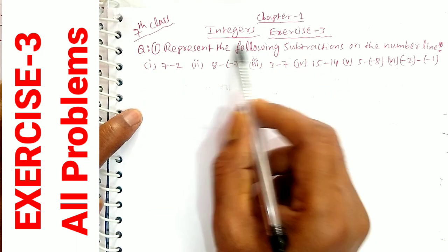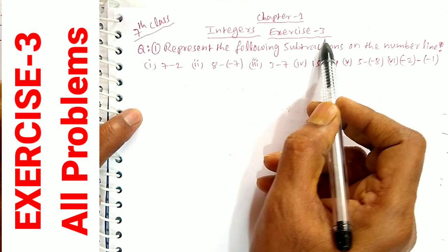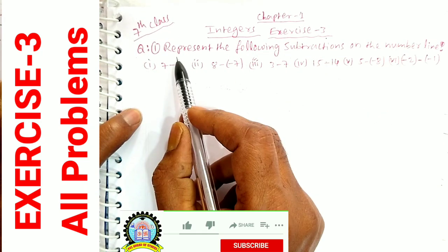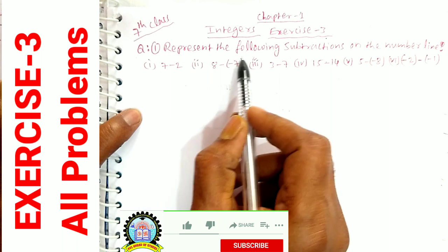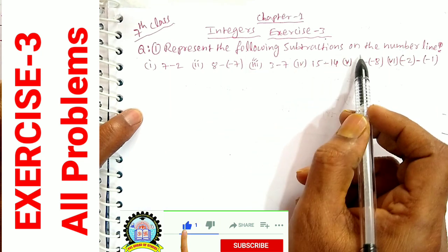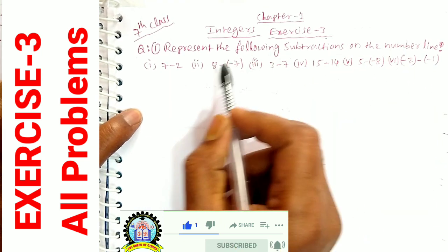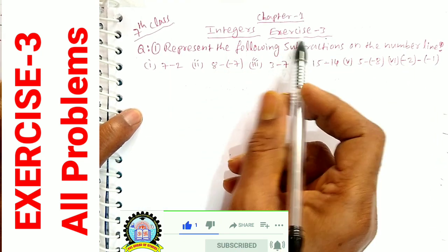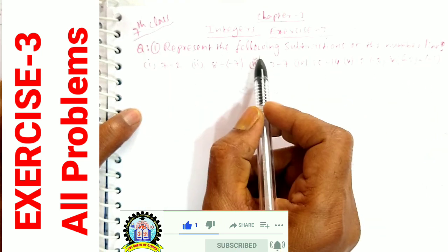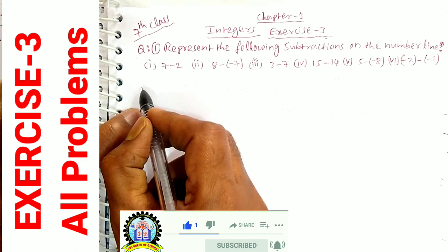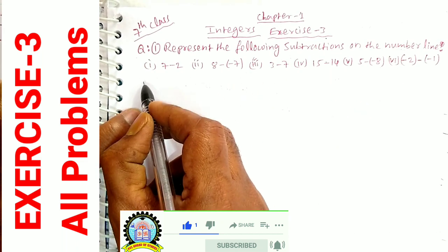11th class, Chapter 1, Integers, Exercise 3. Question number 1 is: represent the following subtractions on the number line. We will add the number line in the exercise and we will subtract them.